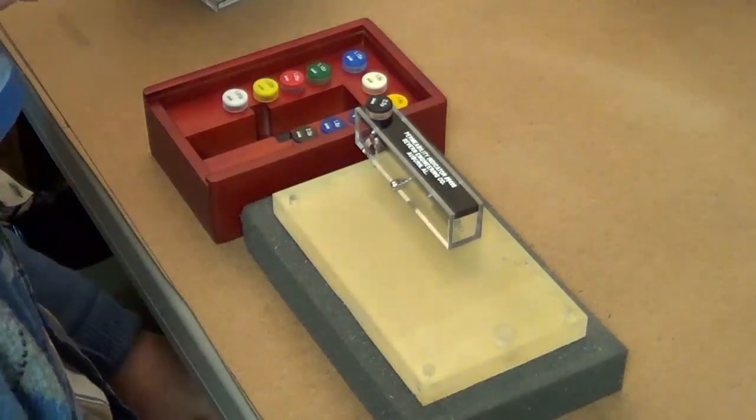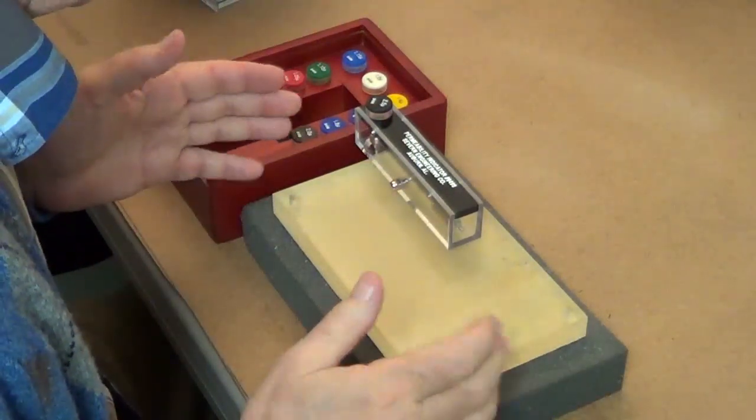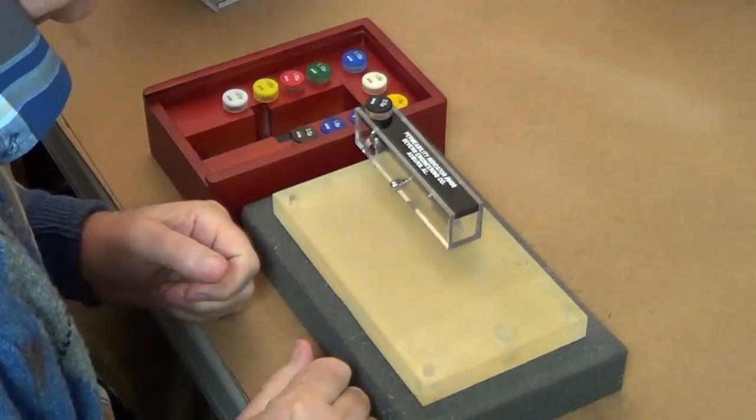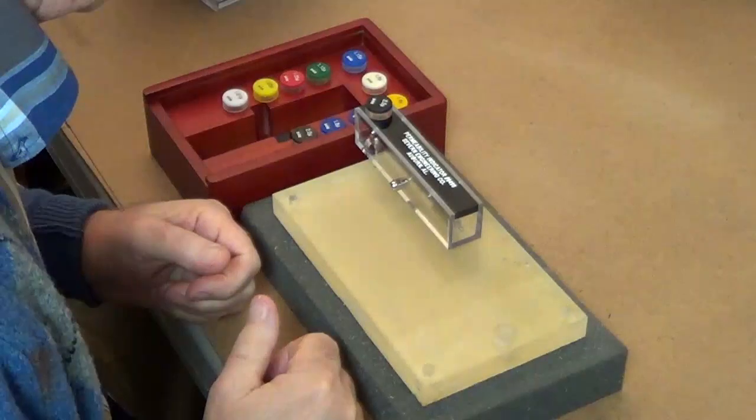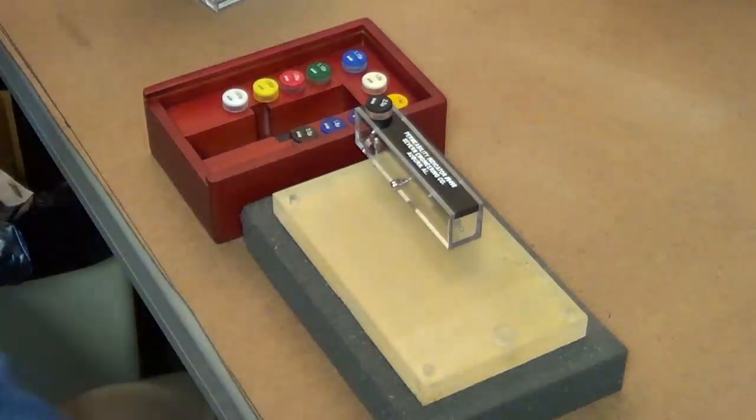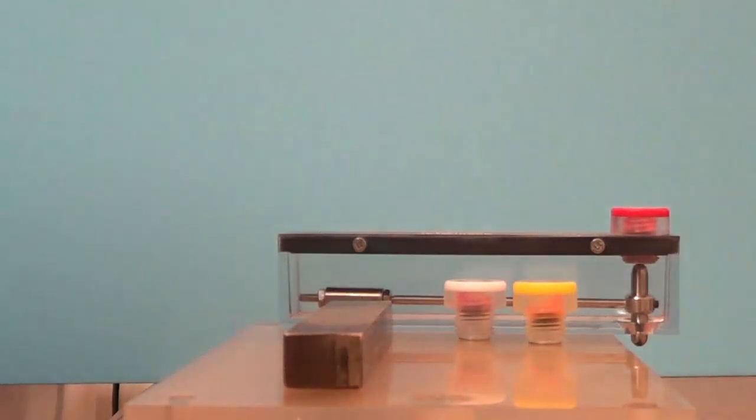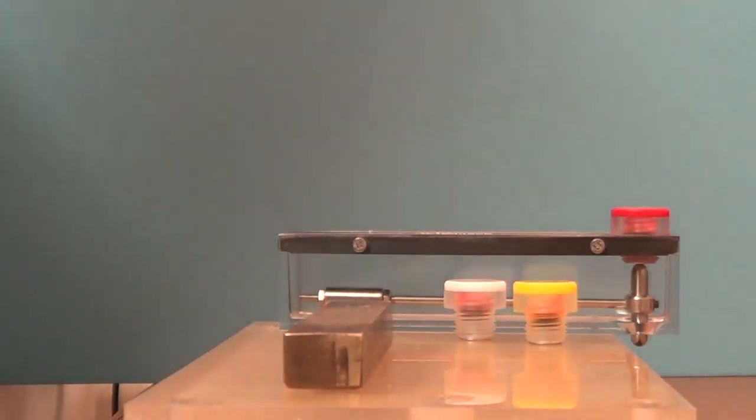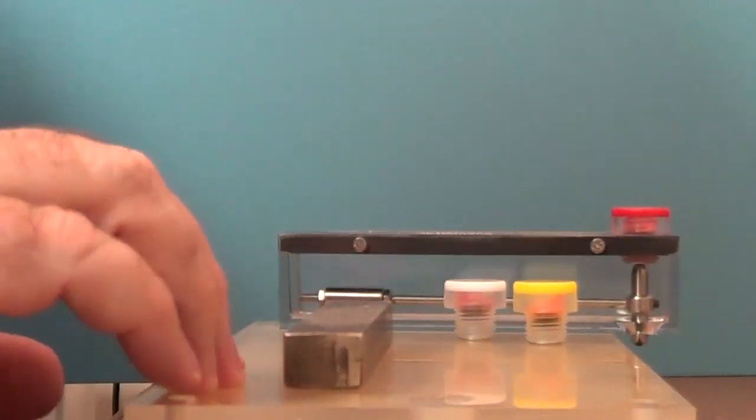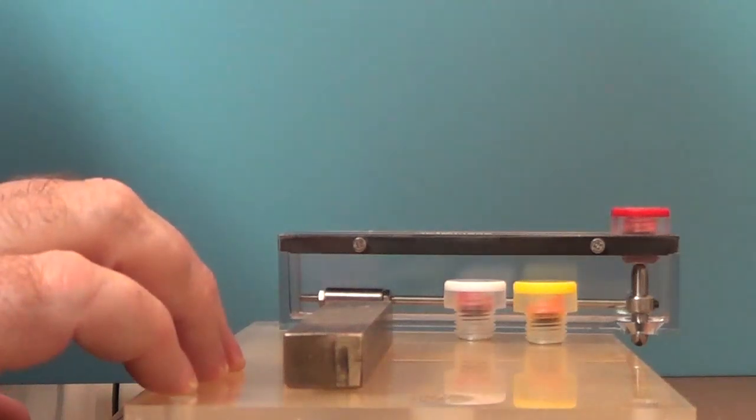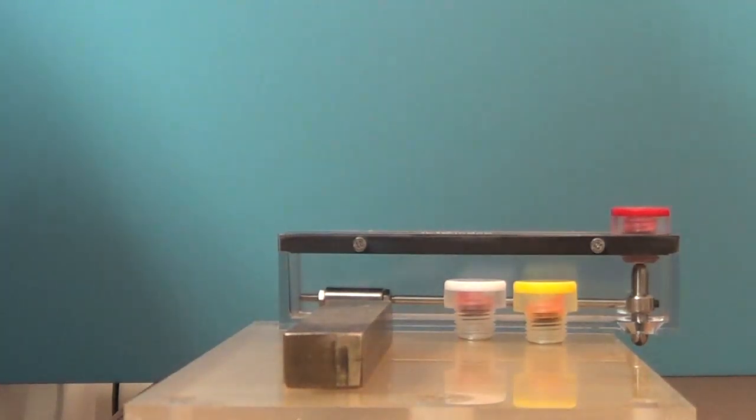Now to continue the process to show you the testing procedure, I'm going to have to change the orientation and location of the camera. So we'll be back in just a moment. Okay, I've moved the camera now to a different orientation, basically looking parallel to the surface of the table and parallel to the surface of the test surface here.